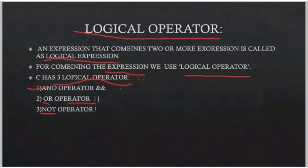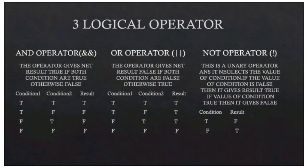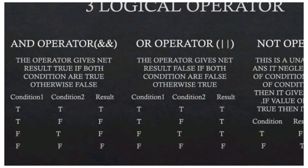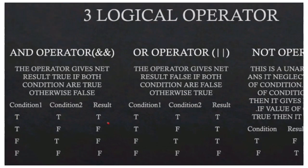The AND operator gives a net result of true only if both conditions are true, otherwise it gives false. If two statements are both true, then the result is true. If only one statement is true and the other is false, the result is false. If the first statement is false and the second is true, the result is also false.